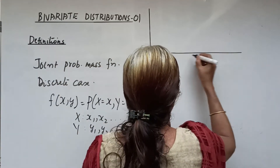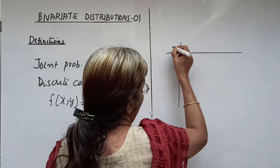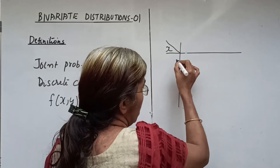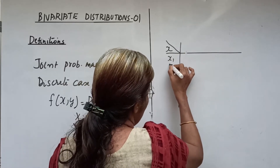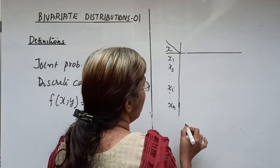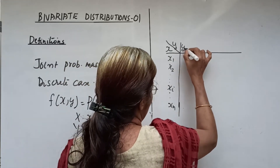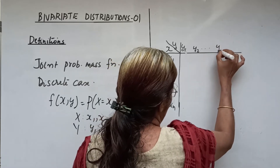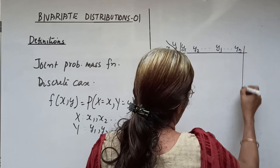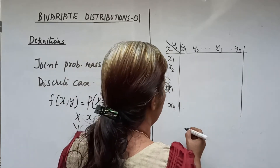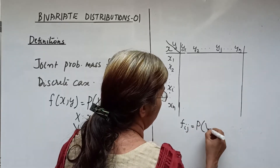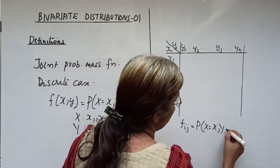We can represent this function as the probability function of x and y in matrix form, where x takes values x1, x2, up to xi and xn, and simultaneously y takes the values y1, y2, up to yj and yn. Then f(xi, yj) gives the probability that x equals xi and y equals yj.